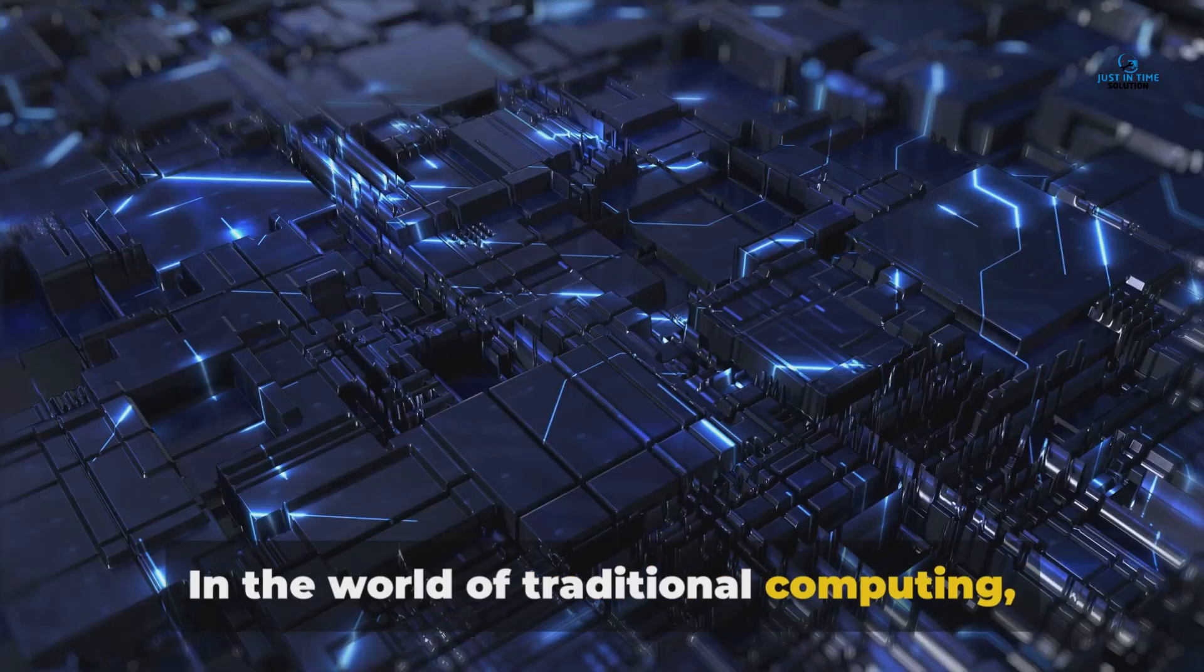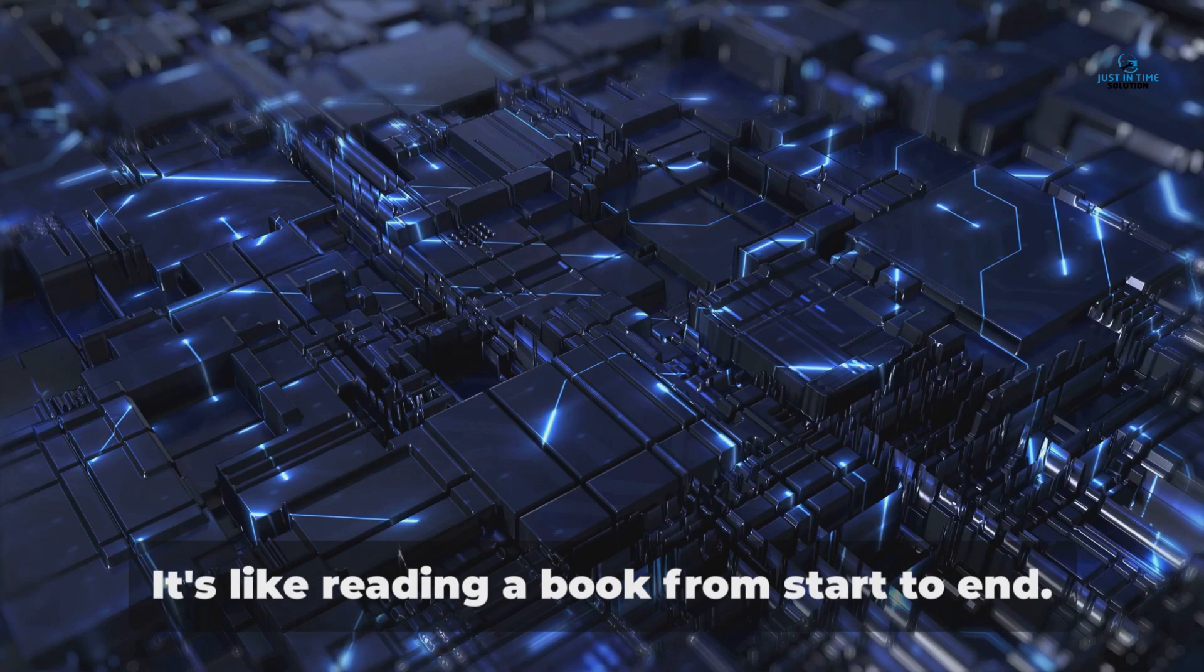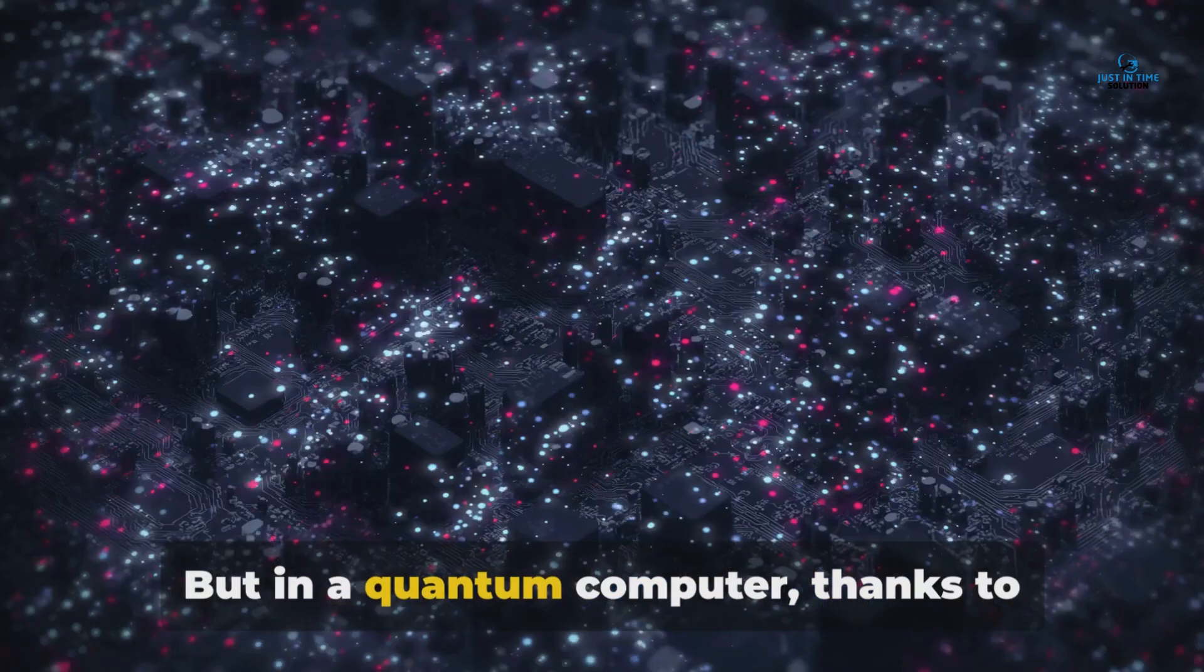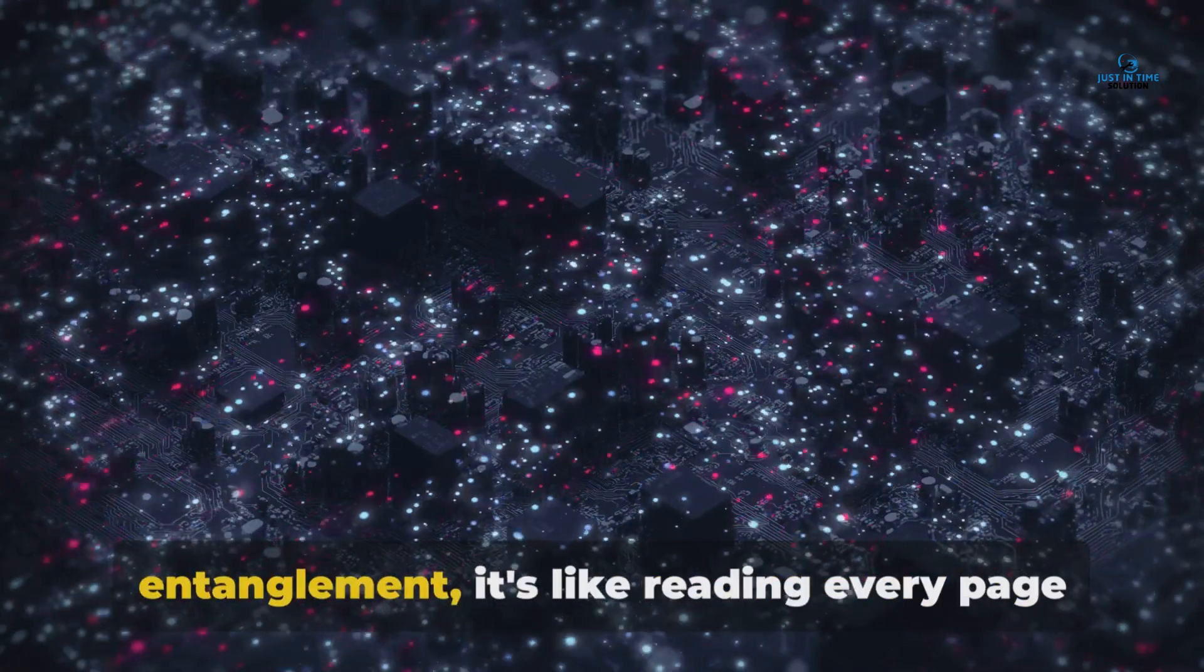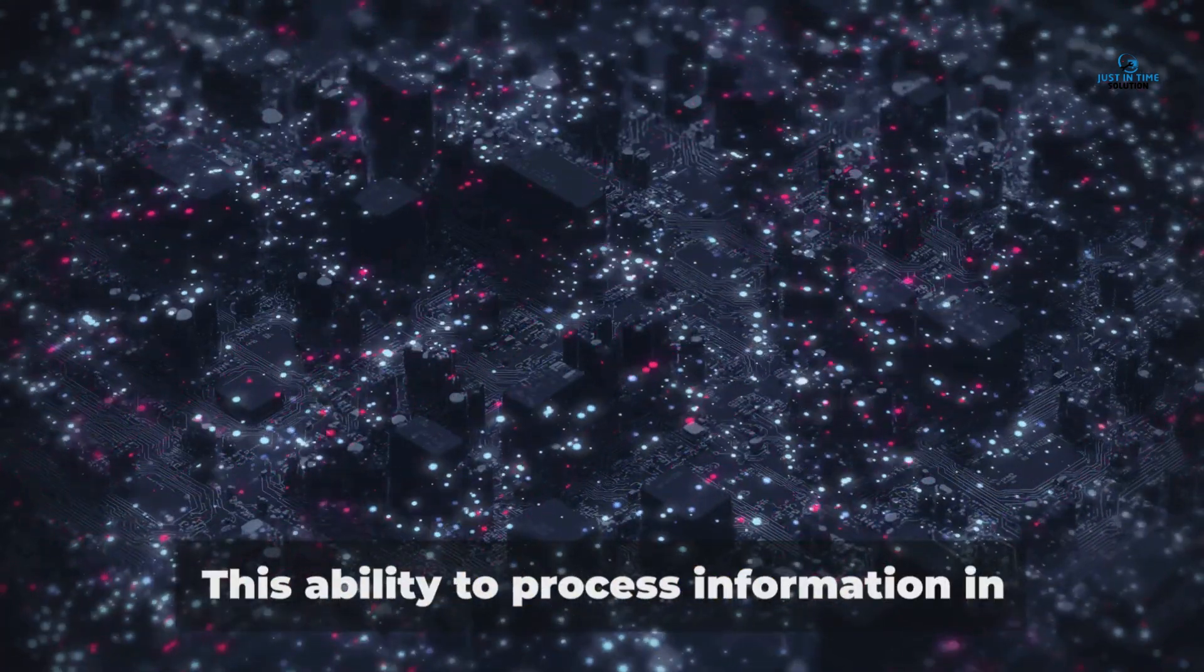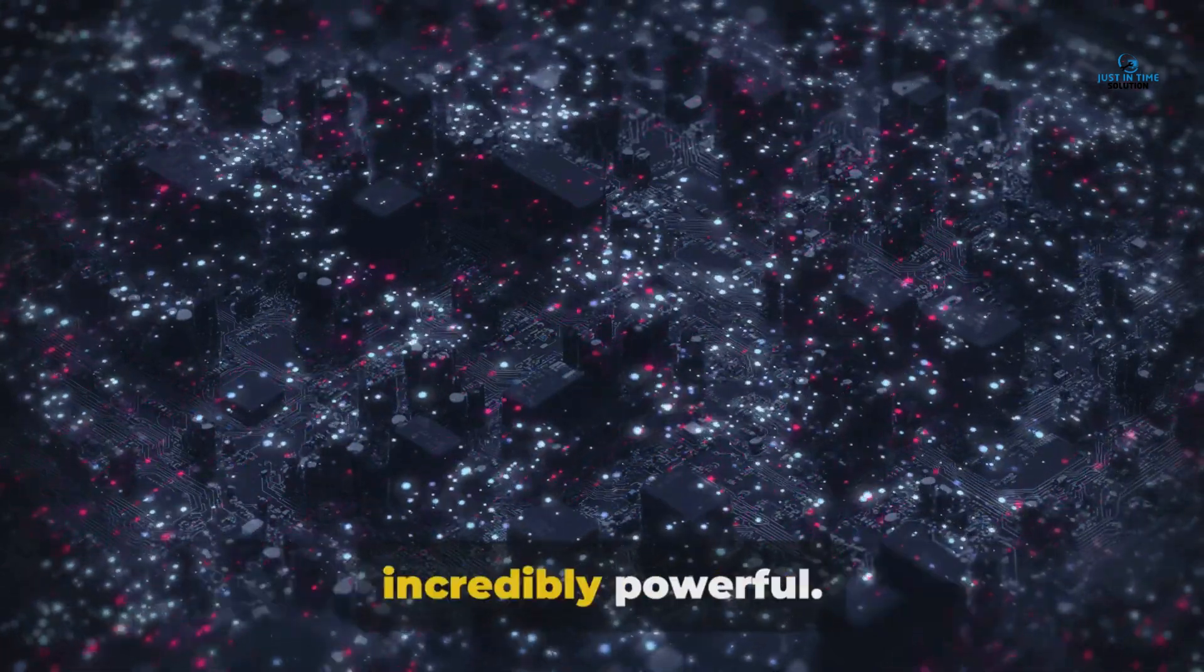This allows quantum computers to process information in a way that's fundamentally different from traditional computers. In the world of traditional computing, information is processed in a linear, orderly fashion. It's like reading a book from start to end. But in a quantum computer, thanks to entanglement, it's like reading every page of the book at the same time.